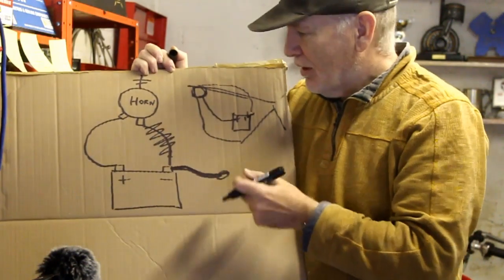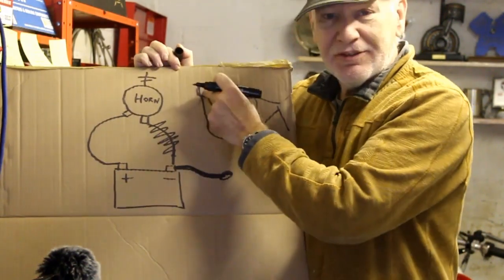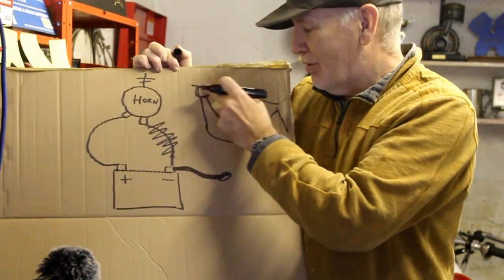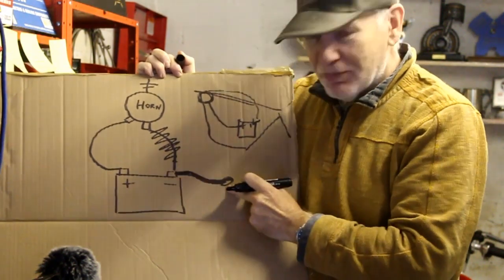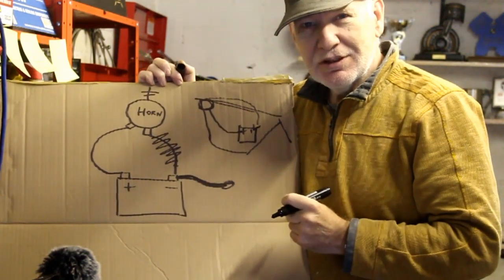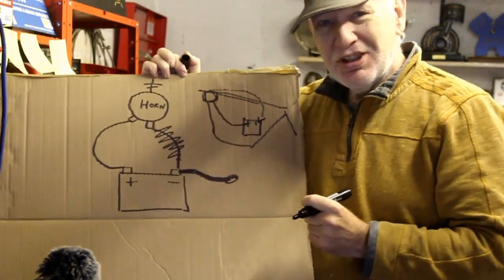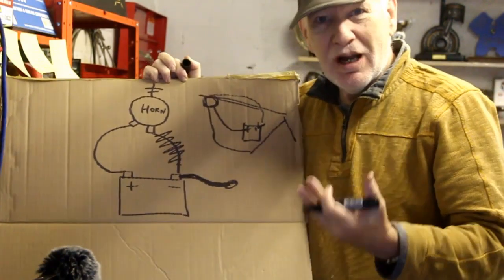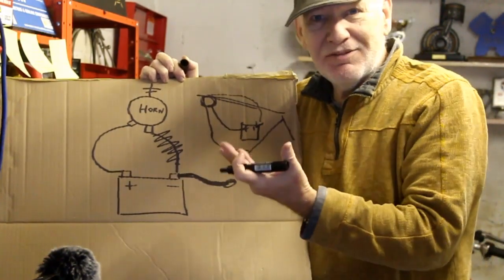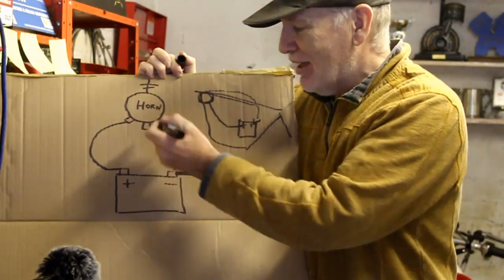There'll be a bolt somewhere and it'll bolt directly to the frame. And that's because there are various components on the bike that are all earthed to the frame itself. And of course the current goes back to this bolt, back to the earth of the battery.